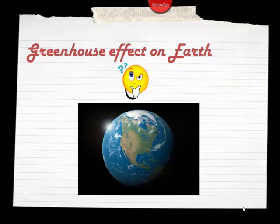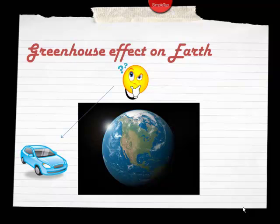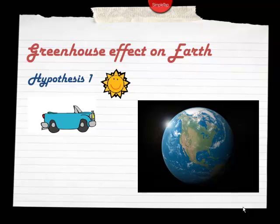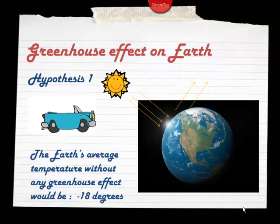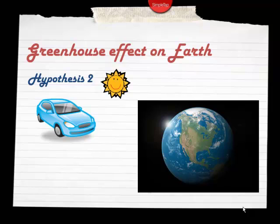Let's now talk about the greenhouse effect on Earth. Will we have the same phenomenon as Jasmine's car with a roof and closed windows, or the same effect as Sam's car with no windows? The first hypothesis: it's just like Sam's car — no windows and no roof. In that case, some of the sun's energy would be absorbed by the Earth but a lot would be reflected back into outer space. The Earth's average temperature without any greenhouse effect would be minus 18 degrees Celsius — pretty cold.